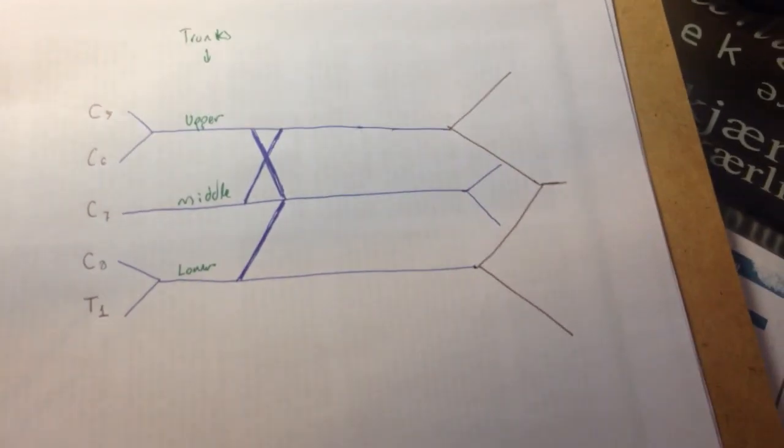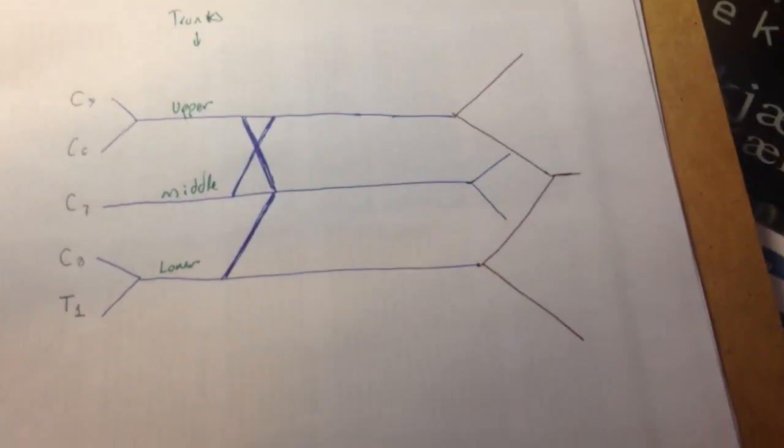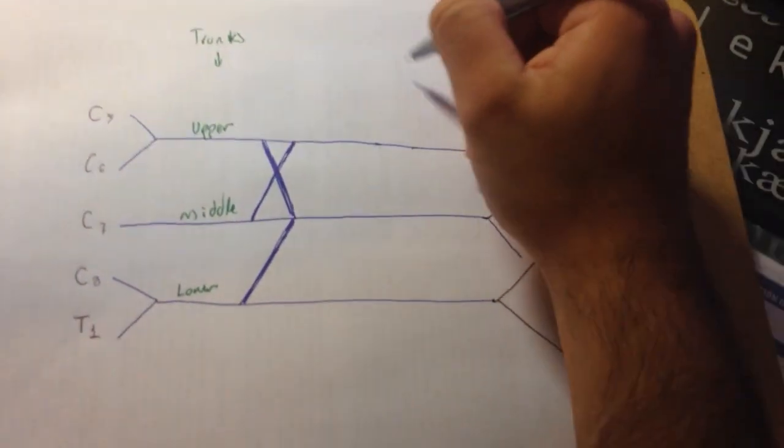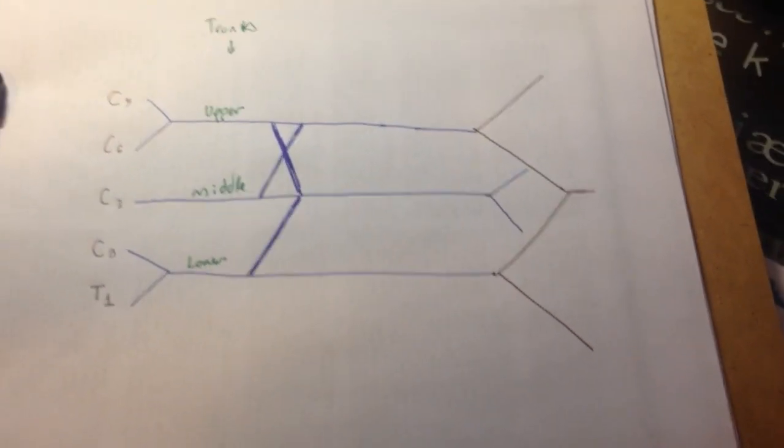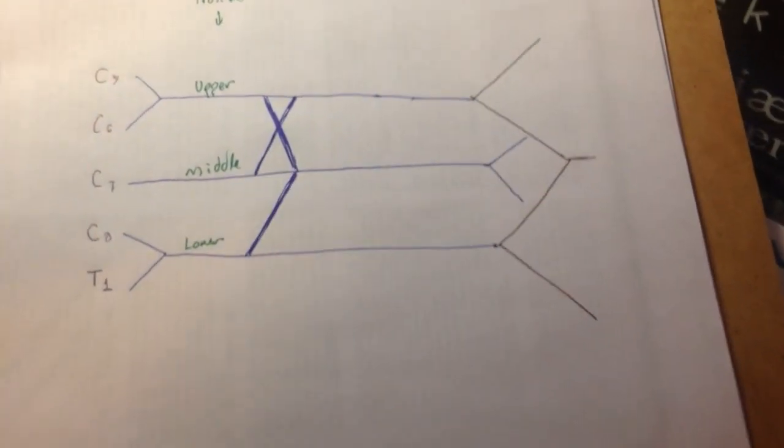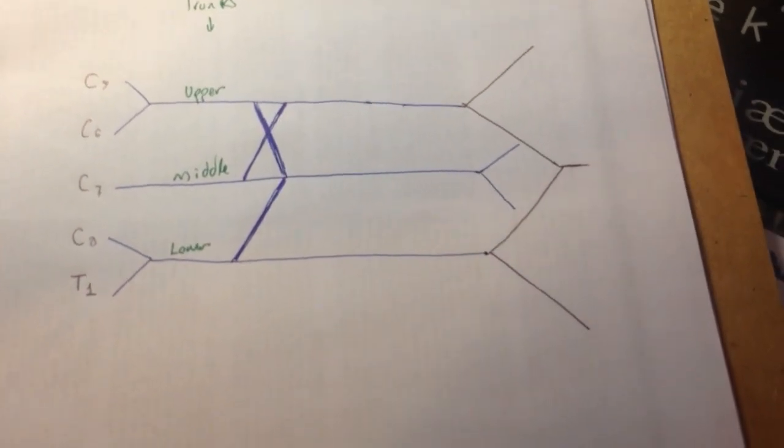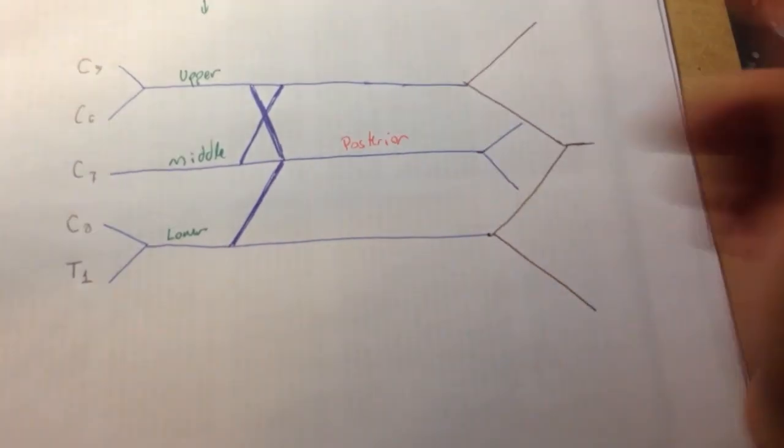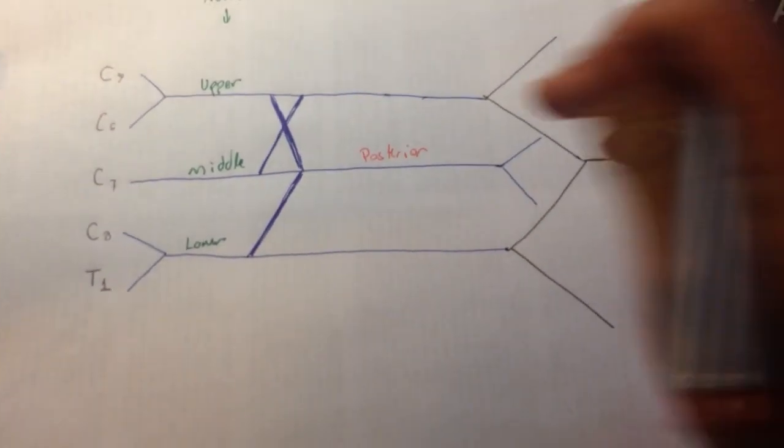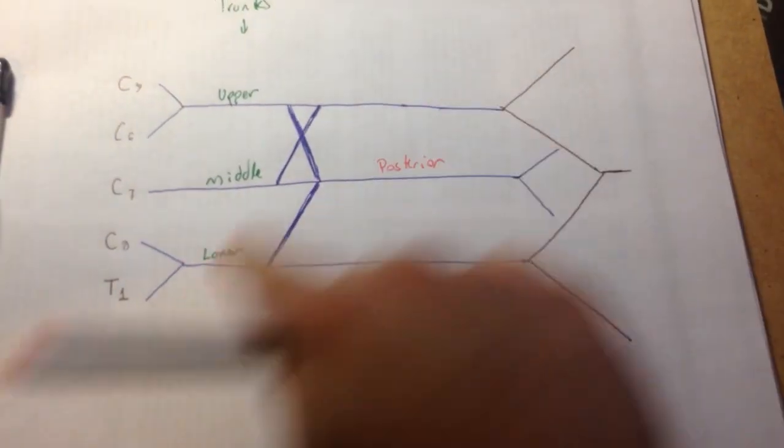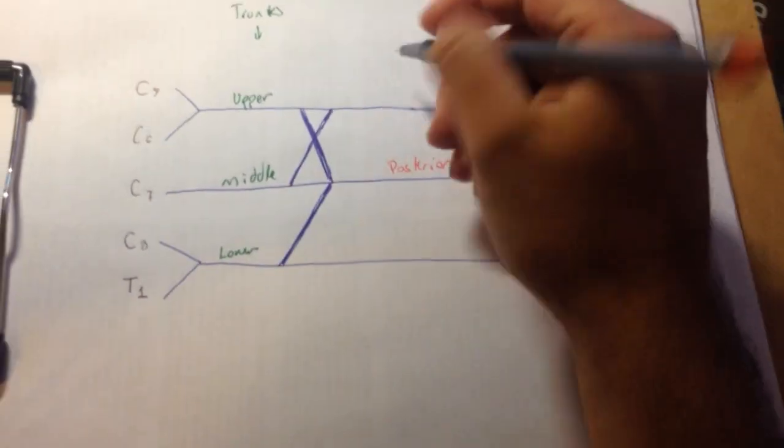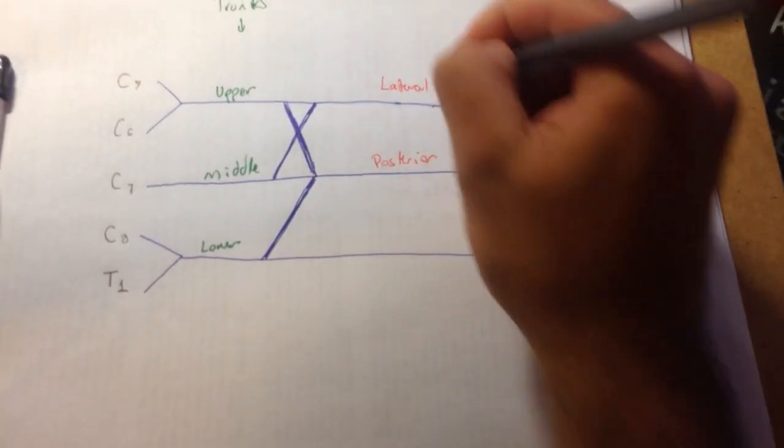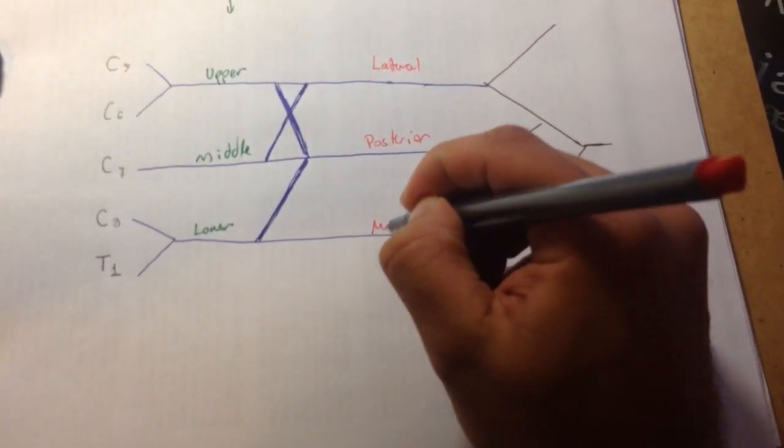Now, the cords are named in a little bit of a different way. So, these are going to be the cords. They're going to be named lateral, posterior, and medial. Posterior is going to be the one in the middle. And then, we're going to have lateral and medial. Lateral goes opposite. L goes opposite to L. So, lateral goes opposite to lower. And then, this one is medial.